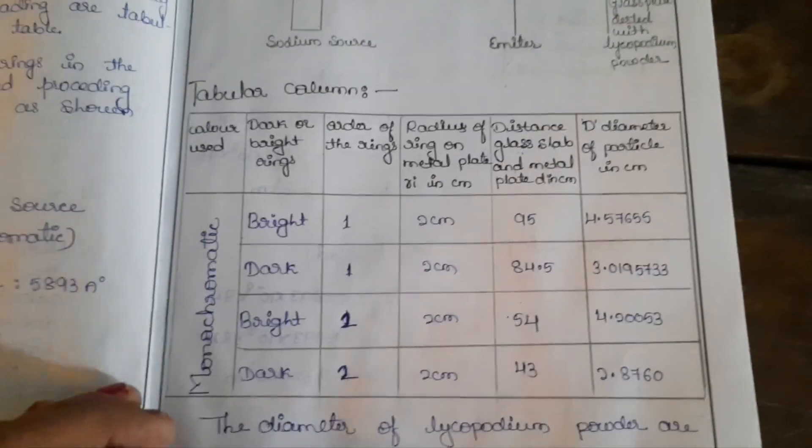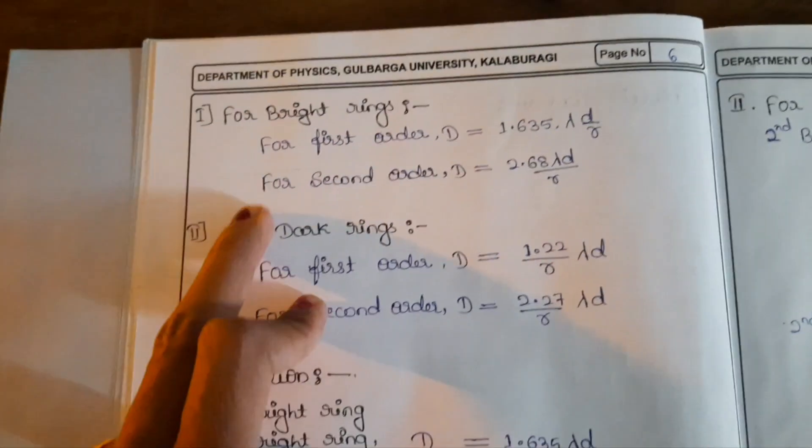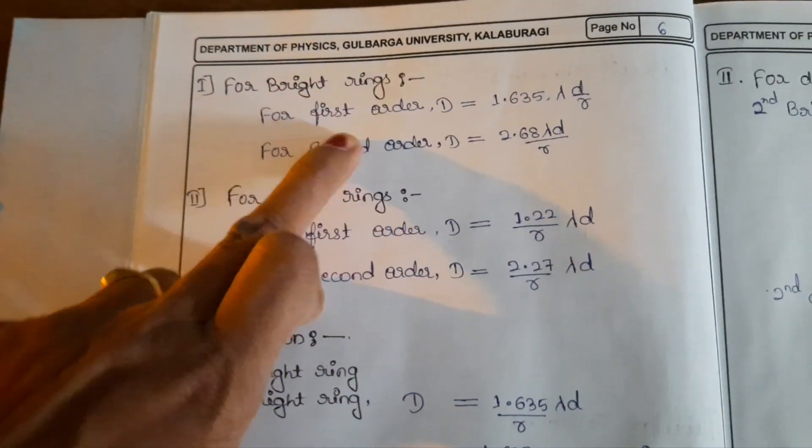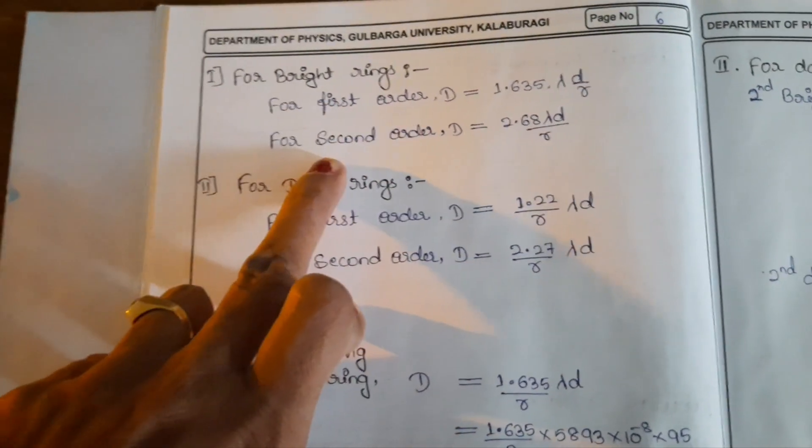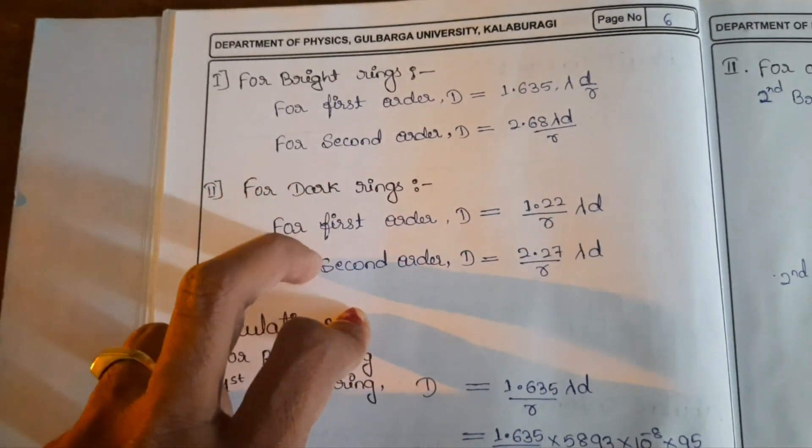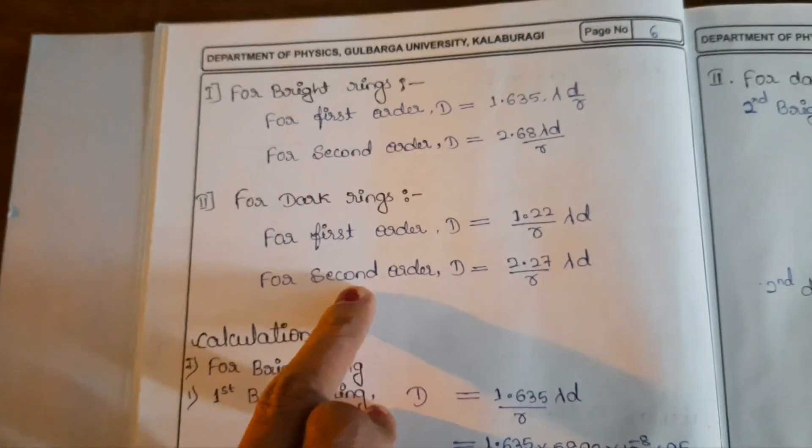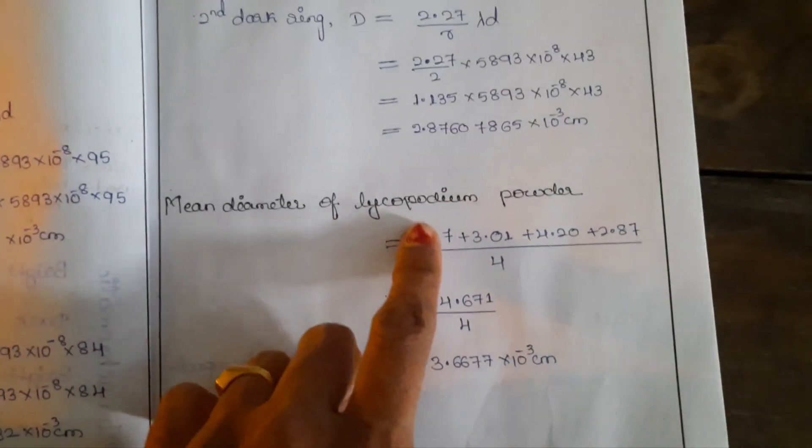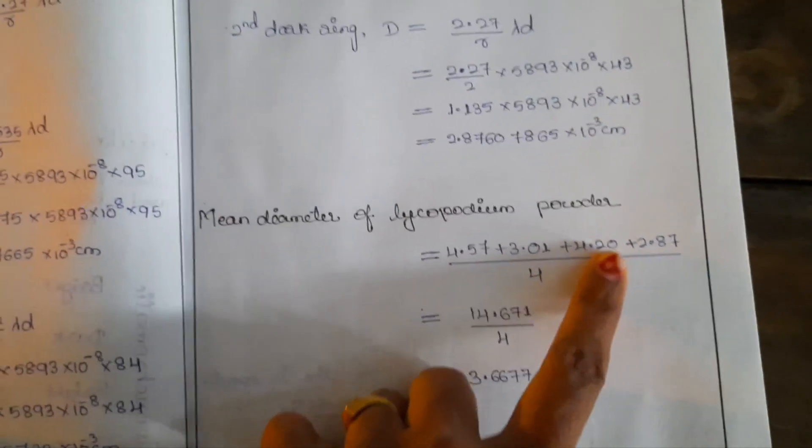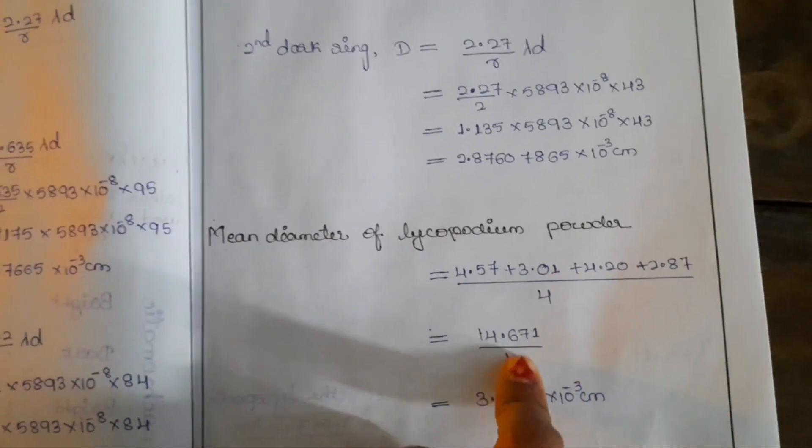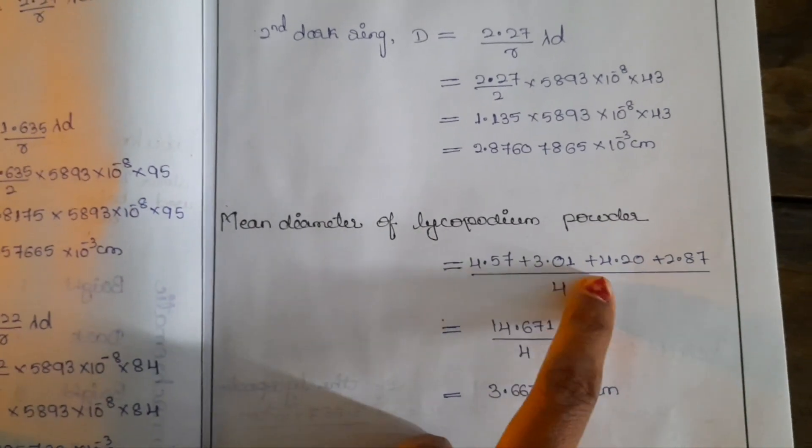After that you can calculate the diameter of the particle using these four formulas: for first order, second order, first dark, first bright, second dark, second bright. After calculating, just take the average of all the four readings. You should add and divide it by four.